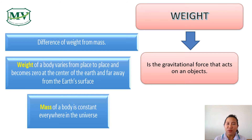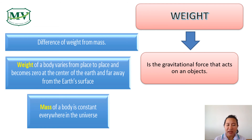Moving on, let us learn what weight means and the difference between weight and mass. Weight is the gravitational force that acts on an object. Weight of the body varies from place to place and becomes zero at the center of the Earth and far away from the Earth's surface, while mass of the body is constant everywhere in the universe. Weight depends on the gravitational force; mass, on the other hand, resists this force. That is why mass is universally constant, meaning it does not change unlike weight.